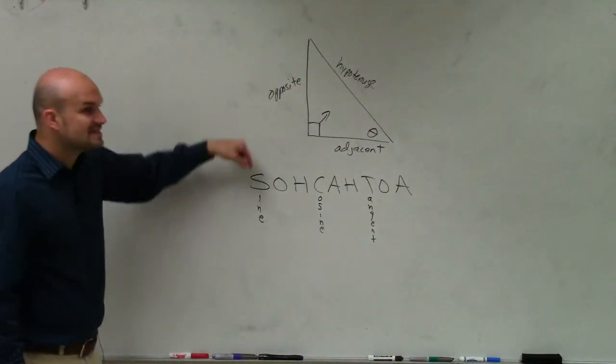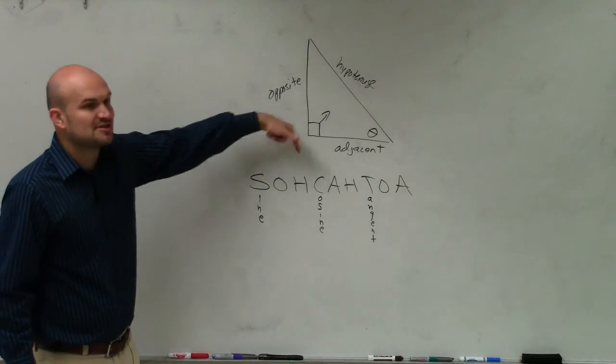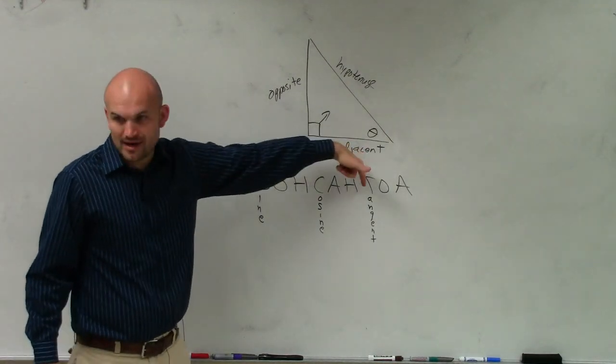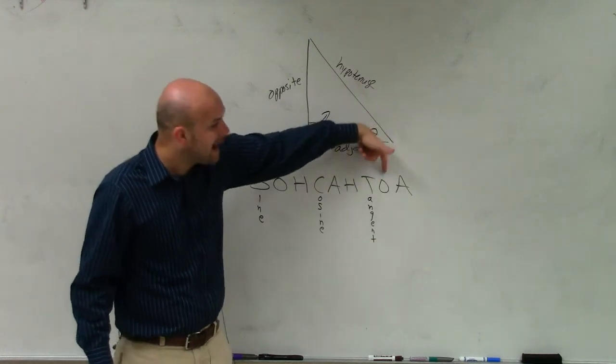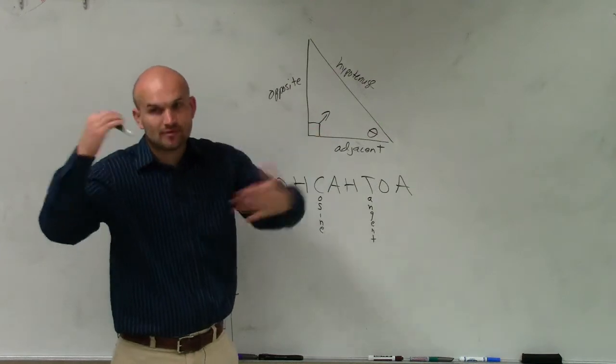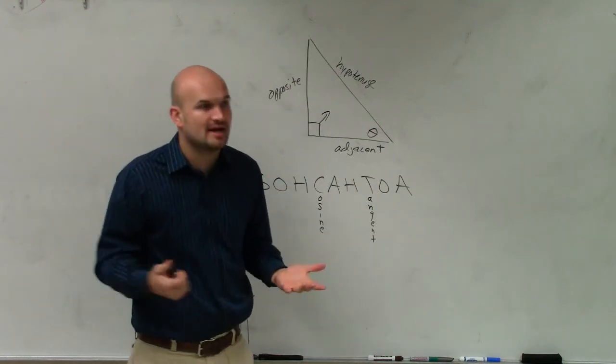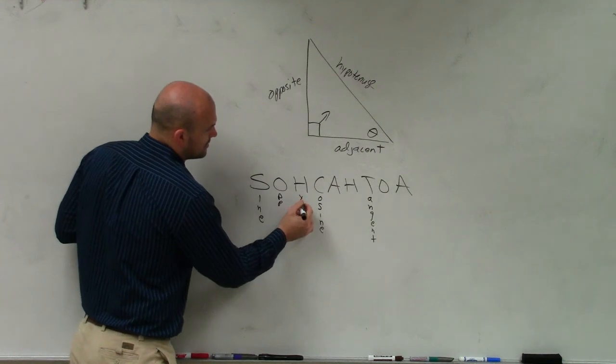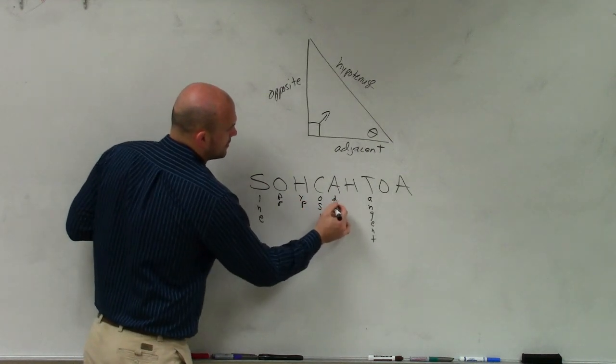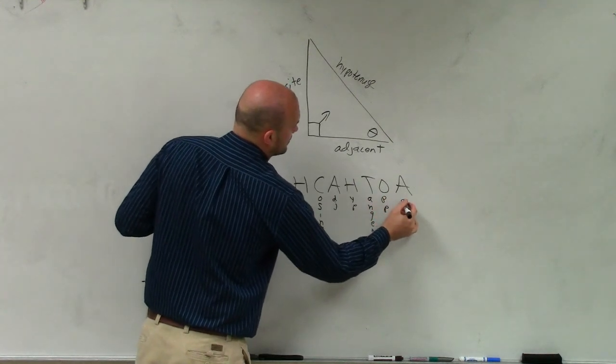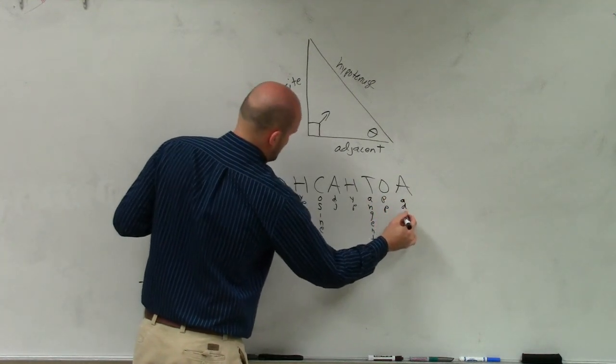So if you guys can remember, sine is opposite over hypotenuse. Cosine, adjacent over hypotenuse. Tangent, opposite over adjacent. So you just kind of remember, oh yeah, that's the ratios that I can set up. So, opposite, hypotenuse, adjacent, hypotenuse, opposite, adjacent.